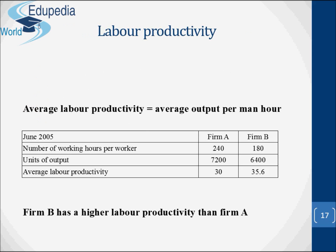What about labor productivity? The average labor productivity equals the average output per man-hour. For example: Firm A has 240 working hours per worker and 7,200 units of output, giving an average labor productivity of 30. Firm B has 180 working hours per worker and 6,400 units of output, giving an average labor productivity of 35.6. As you can see, Firm B has a higher labor productivity than Firm A.